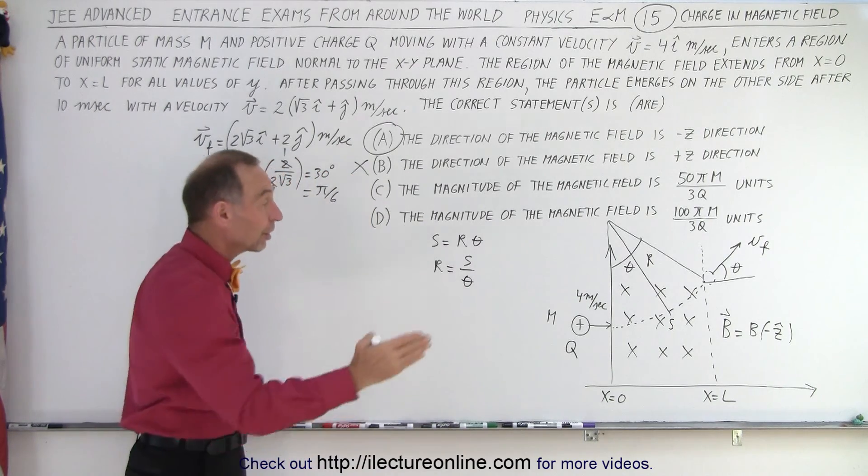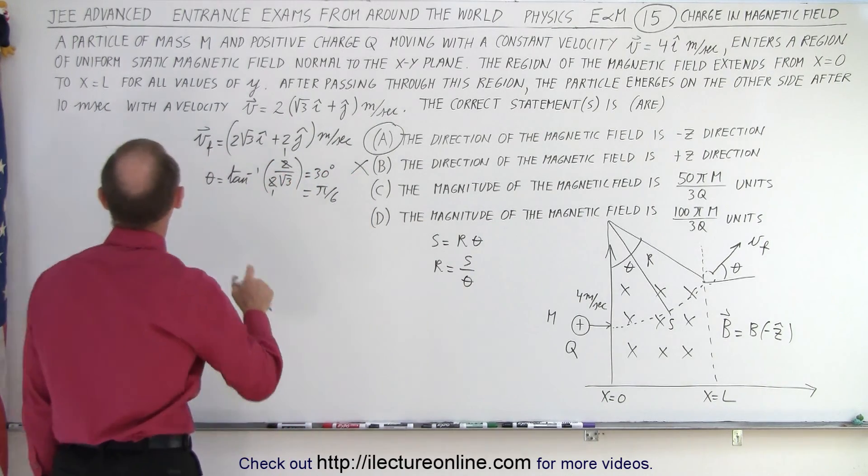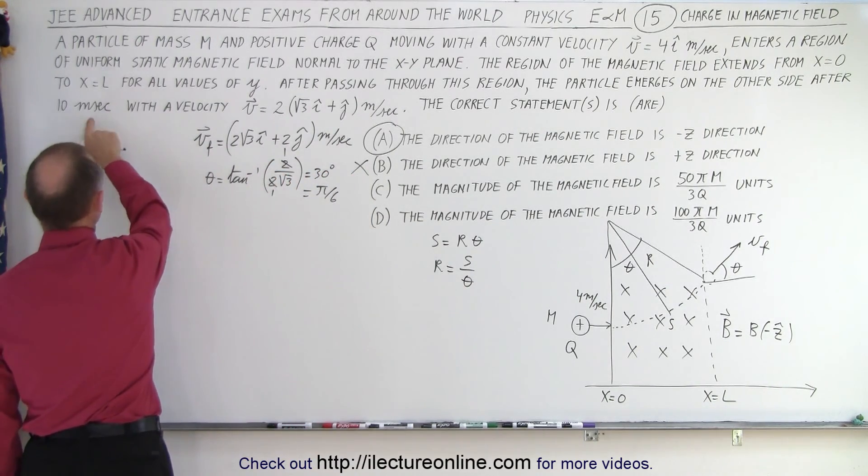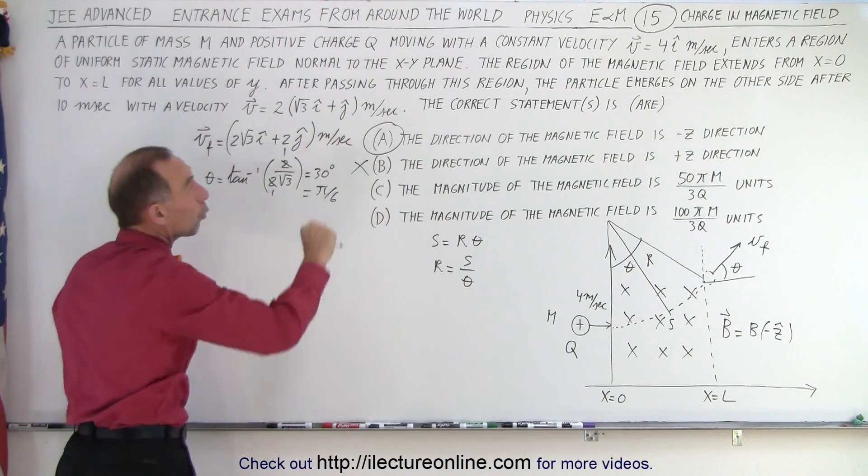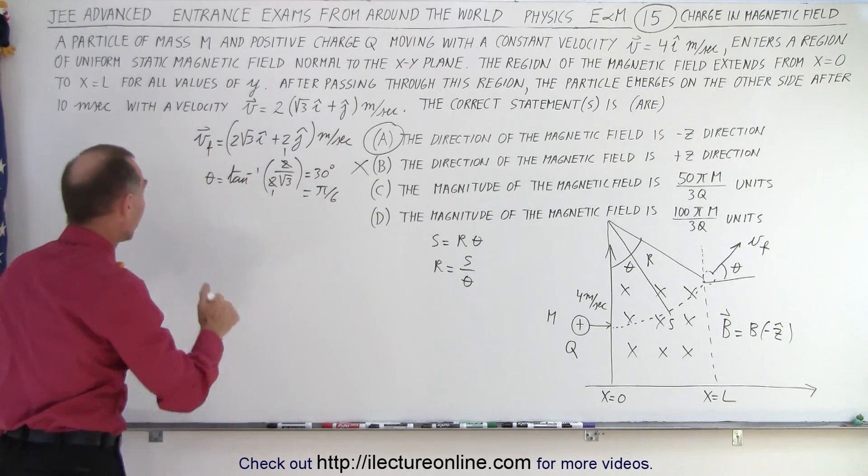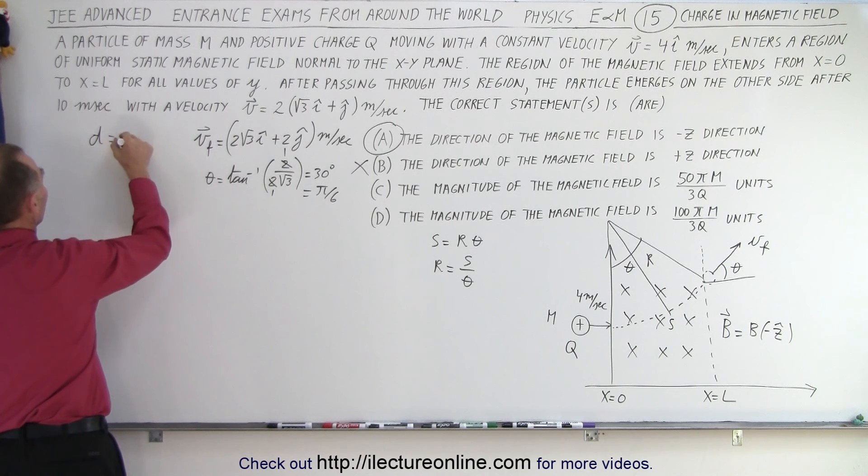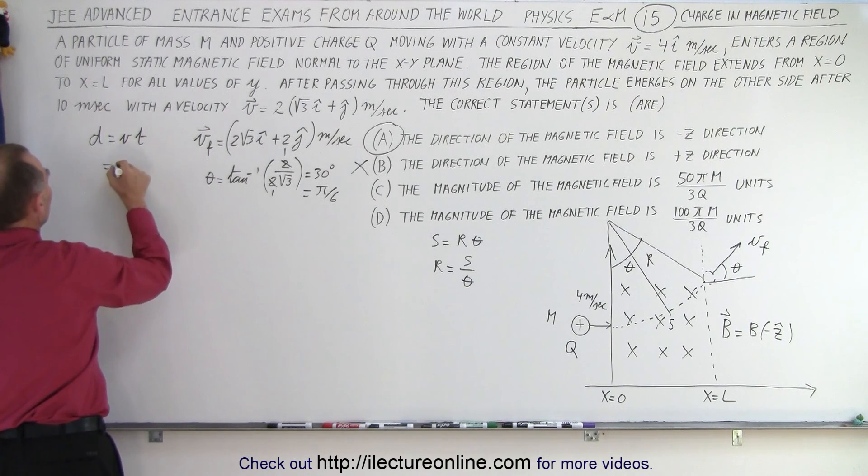Now how far did the particle travel? Well we know that the particle traveled for a time of 10 milliseconds at a speed of 4 meters per second. We know that distance equals velocity times time, so this would be equal to 4 meters per second times the time of 0.01 seconds.